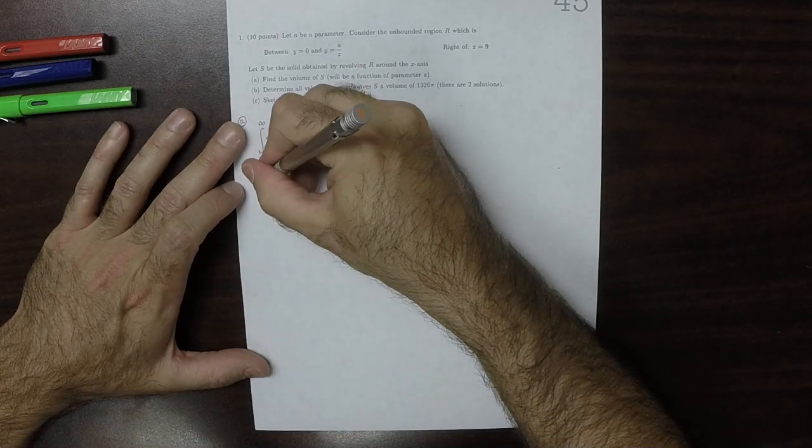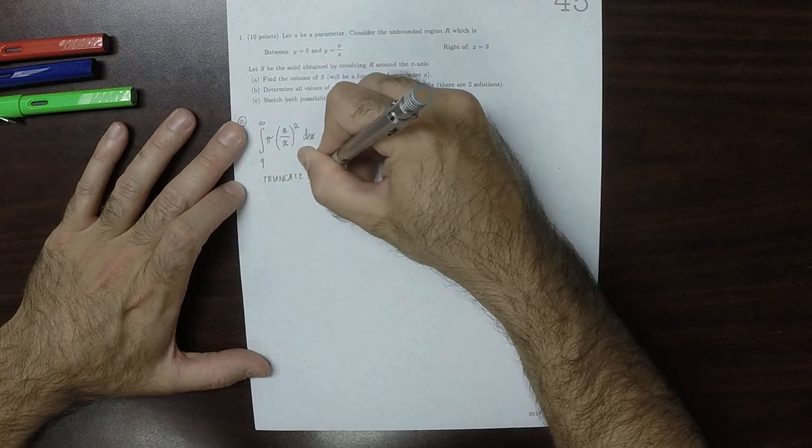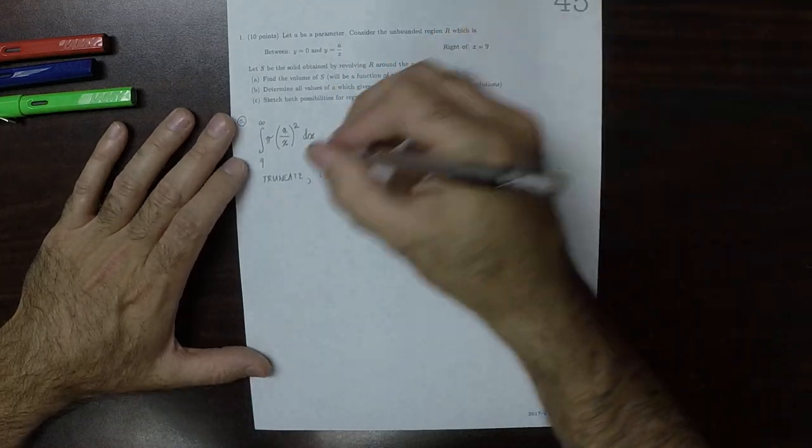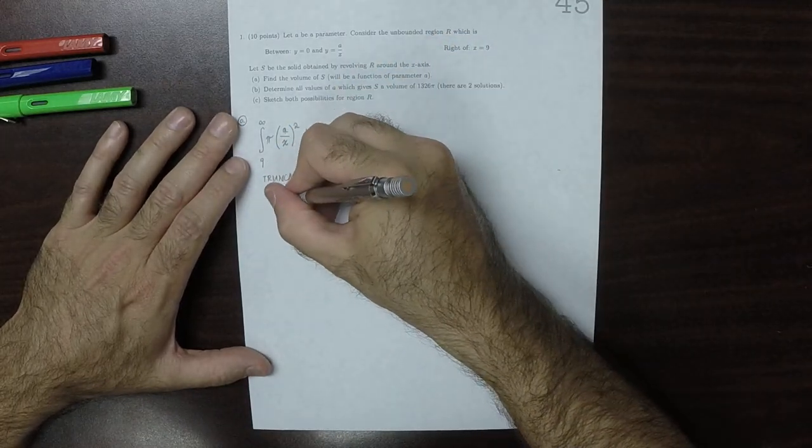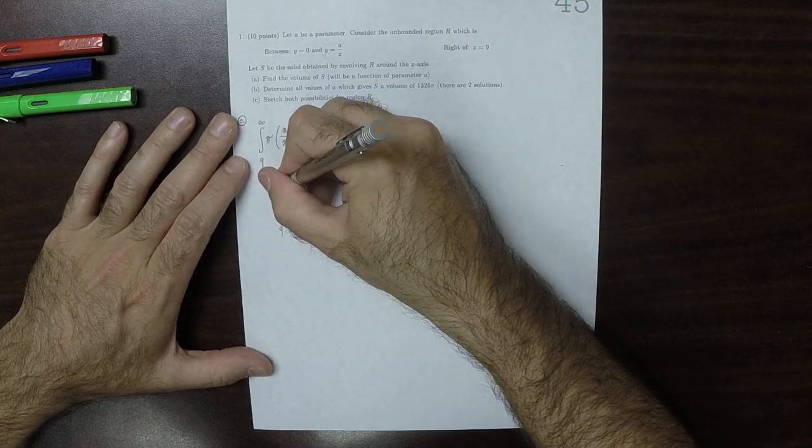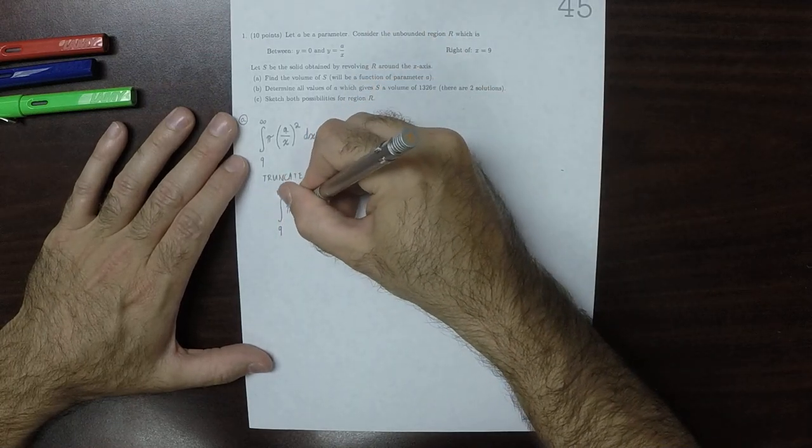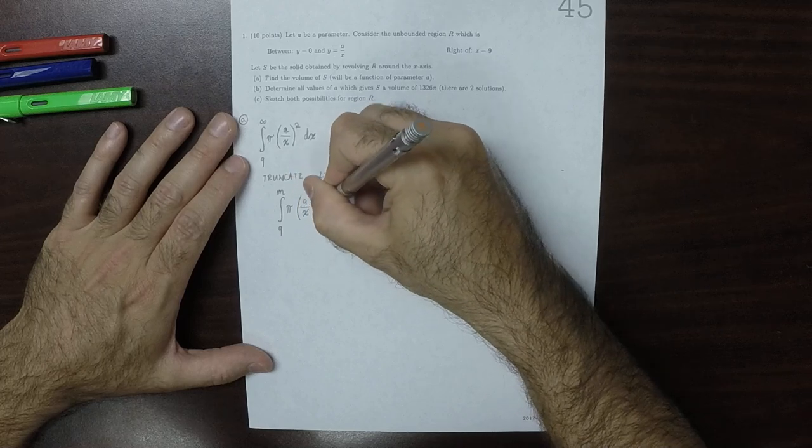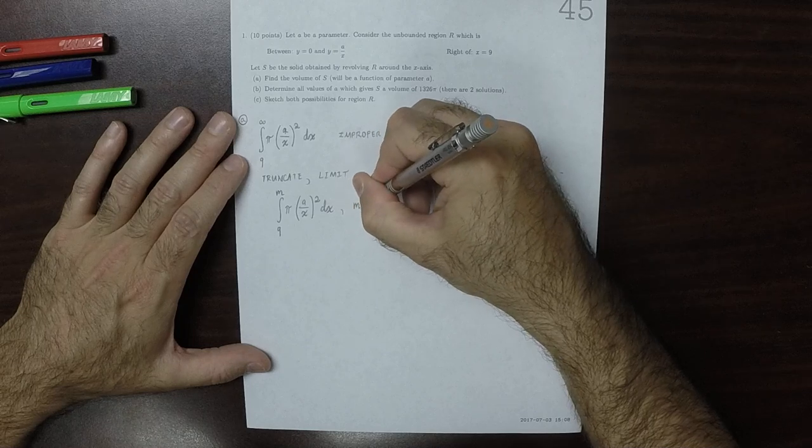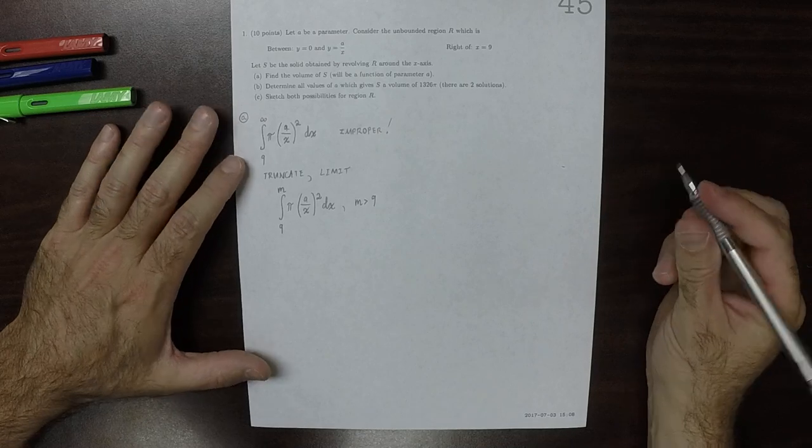So we'll have to do the same truncate and limit as usual. We'll go from the integral from 9 to, say, m, of pi A over x squared dx, where m is more than 9 but constant.